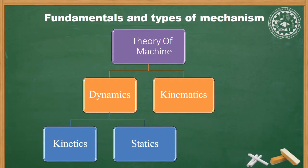Firstly, to start this chapter, we see the definition of our subject — Theory of Machine. What is Theory of Machine? It is the branch of applied science which is used to understand the relative motion between the parts. Simply, it is the study of motion. Theory of Machine means the motion study of the parts — how parts have motion in between them. That study is called TOM, Theory of Machine.